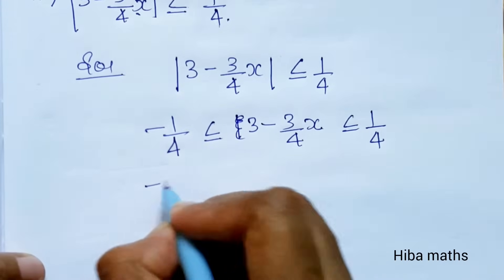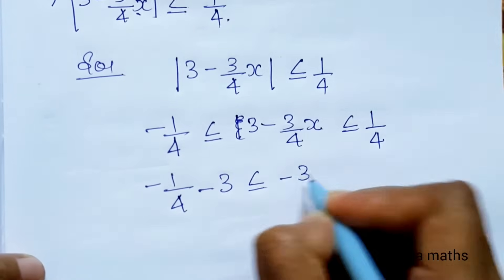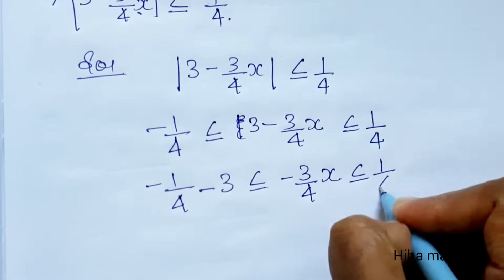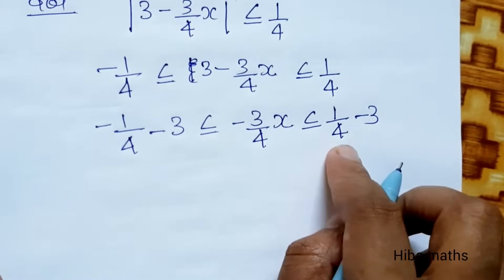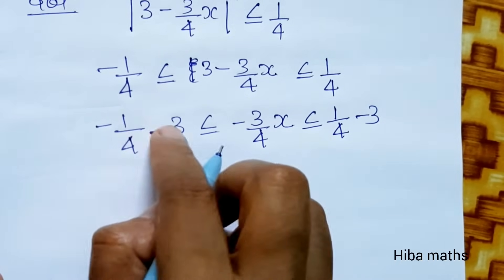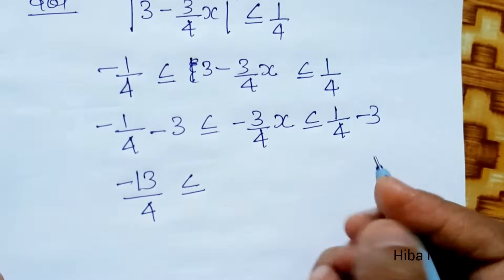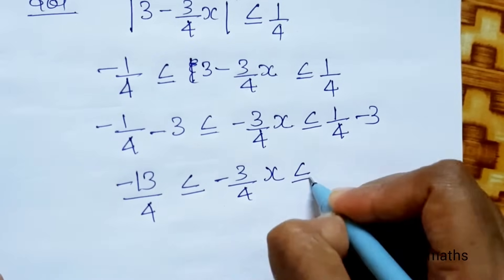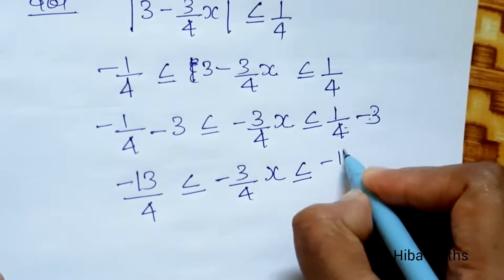Subtracting 3 from all parts: minus 1 by 4 minus 3 is less than or equal to minus 3 by 4 into x is less than or equal to 1 by 4 minus 3. Converting: 4 times 3 is 12, so minus 12 plus 1 is minus 13 by 4 on the left. On the right, 1 minus 12 gives minus 11 by 4.